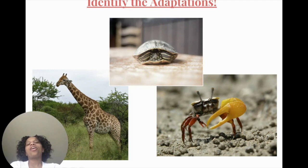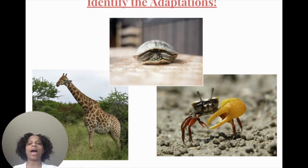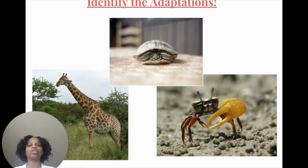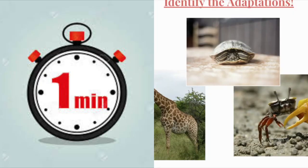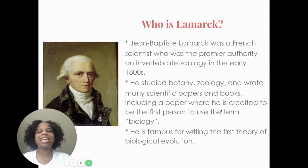Now a quick activity: I want you to identify the adaptation. Looking at these three pictures — a giraffe, a turtle at the top, and a crab on the side — look at the pictures and on your notes write out what adaptation you may see. You have one minute. Okay, your minute is up — make sure you have your items written down for what the adaptations are.